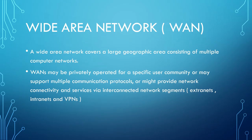As opposed to a LAN, a WAN covers a large geographic area consisting of multiple computer networks. WANs may be privately operated for a specific user community, may support multiple connection protocols, or might provide network connectivity and services via interconnected network segments. Examples include extranets, intranets, and VPNs, which we will discuss further in later slides.